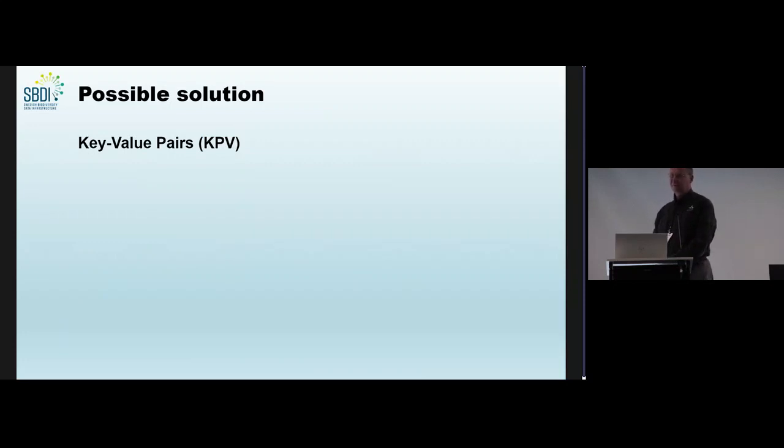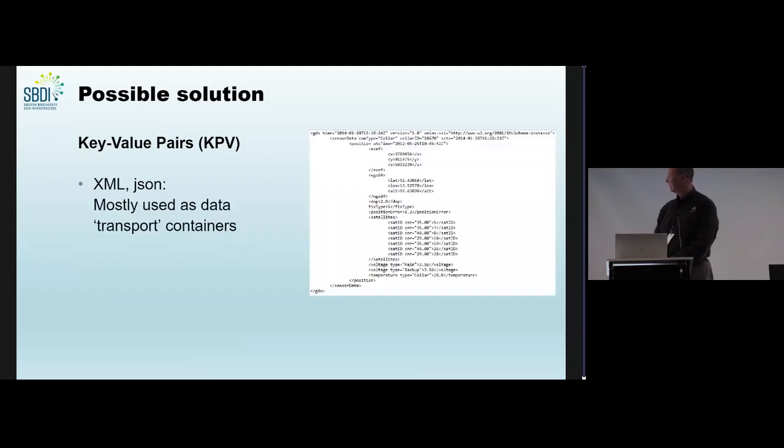So, a possible solution is to use key value pairs. And you all have stumbled upon key value pairs, even though you might not have thought about it. When you use XML, when you use JSON, then you use key value pairs. However, in this context, it's mostly used as data transport containers. What we try to do is we use it for direct data storage in a NoSQL database.